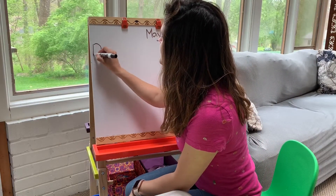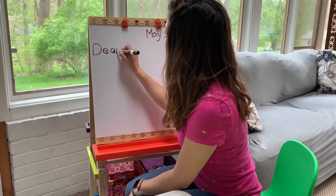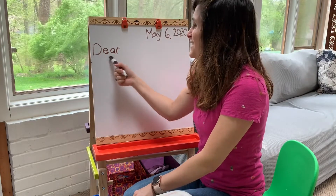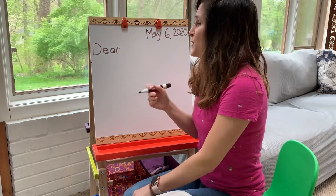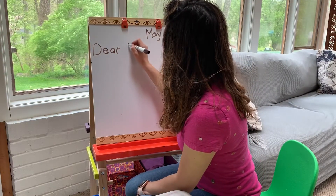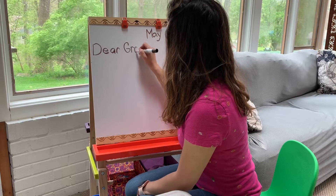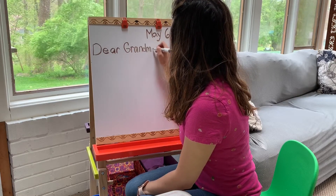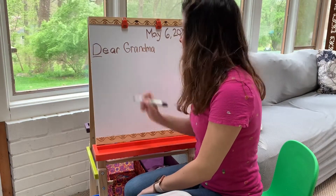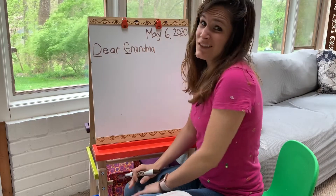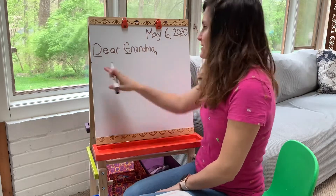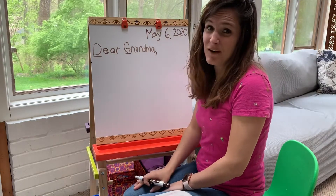Next, a very important part of a friendly letter is you have to address who you're writing to. We usually start a letter with 'dear.' I'm going to put a pretend family member — I'm going to write to my grandmother. So I'll write 'Dear Grandma.' You'll notice I capitalized 'Dear,' and I also capitalized 'Grandma' because that's her name to me. Then I finish my greeting with a comma. So 'Dear Grandma,' — that's my greeting.